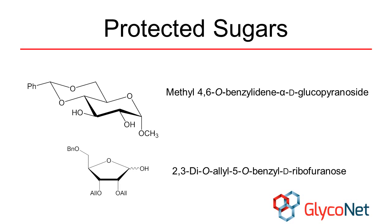Sugars containing protecting groups are named similarly to modified sugars. The number of each type of protecting group is indicated using a prefix such as di or tri, and a number used to indicate the position of the protecting group. The protecting groups are then listed alphabetically, disregarding prefixes such as di and tri. The atom through which the protecting group is attached, usually oxygen or nitrogen, is also indicated with an italicized capital letter.